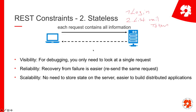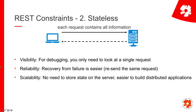Statelessness is extremely beneficial for debugging — you only need to look at one single request. If the second request depends on the first, you'd have to debug the entire history. Reliability is another advantage: if there's an error, you just re-send the last request. With a stateful system you might have to start from scratch — login again, list emails again, and so on. Testing also becomes easier because you can test things separately.